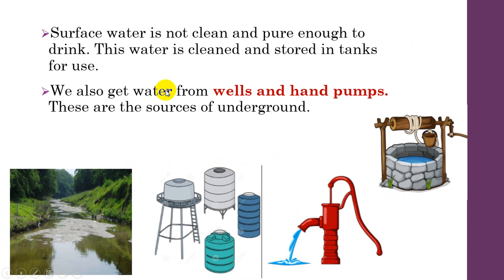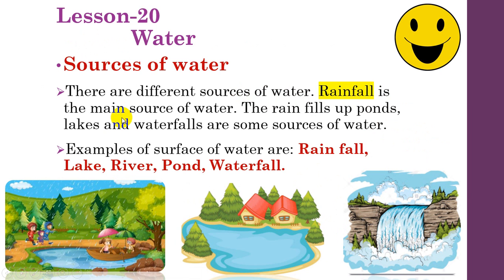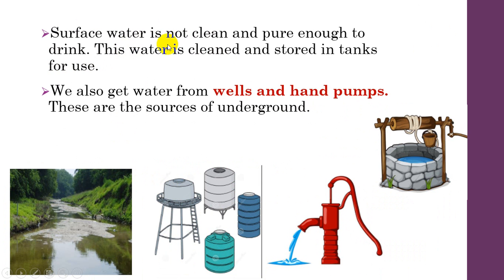Surface water is not clean enough to drink directly. Underground water examples are well and hand pump. Surface water examples are lake, river, pond, waterfall, and rainfall.